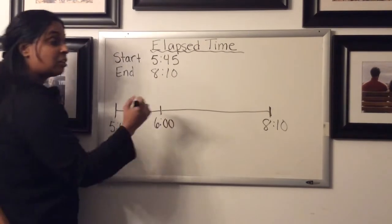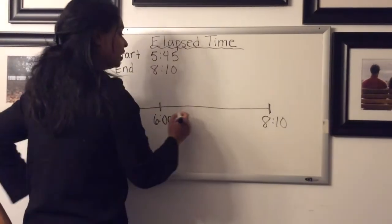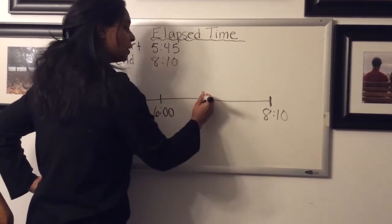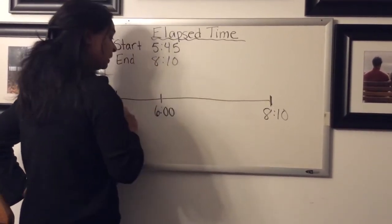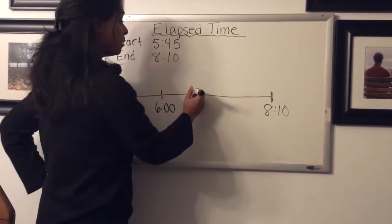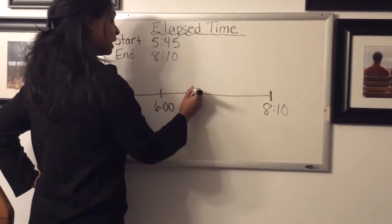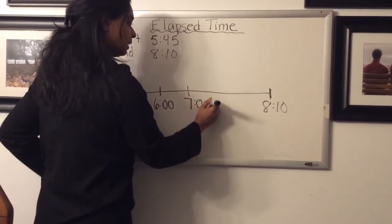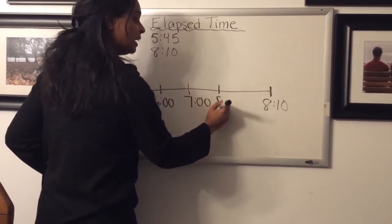Then we look ahead. Now I'm still quite away from 8:10. I know I can go up another hour. So the strategy will be get yourself to the nearest hour, then start counting up as many hours as you can without going over this time here. So I can get to seven o'clock. And I can actually get to eight o'clock.